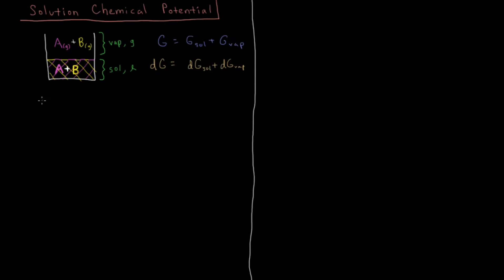We make the assumption that no particles are appearing or disappearing. A particle of A exists either as solution or as vapor; same for B, and neither can leave the system. At equilibrium the number of particles is constant, so the change in the number of B particles in the vapor equals the change in B particles in solution, and that equals zero. We fix B as a fixed component and focus on what happens to A to simplify things.